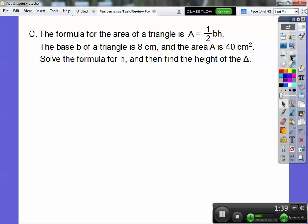The formula for the area of a triangle is A equals 1/2 bh, where b is the base and h is the height. The base of a triangle is 8 centimeters, and the area is 40 centimeters squared. There's two parts to this. It says solve the formula for h, so we've got to solve for h first. Then find the height of the triangle.